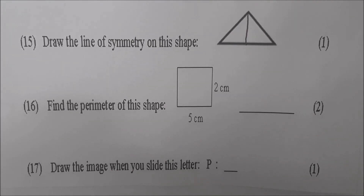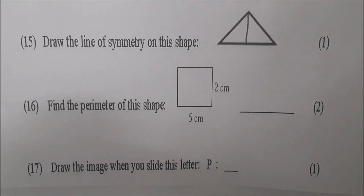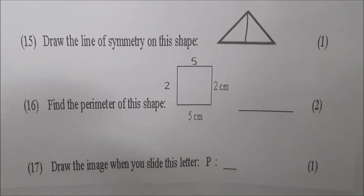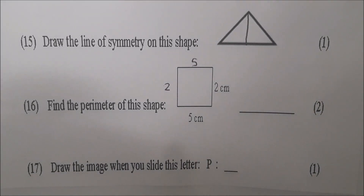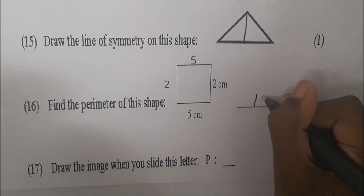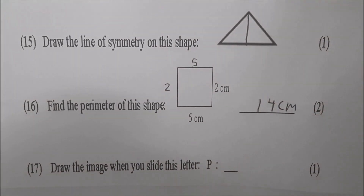Go to number sixteen. Find the perimeter of the shape. Do you know what perimeter means? Yes, sir. Add all the sides. So put in the rest of the sides — that side would be two centimeters, that side would be five. Add them all up. Fourteen. Write it on the line: fourteen centimeters. She added five and five is ten, and two is twelve, and two is fourteen to get all the sides.